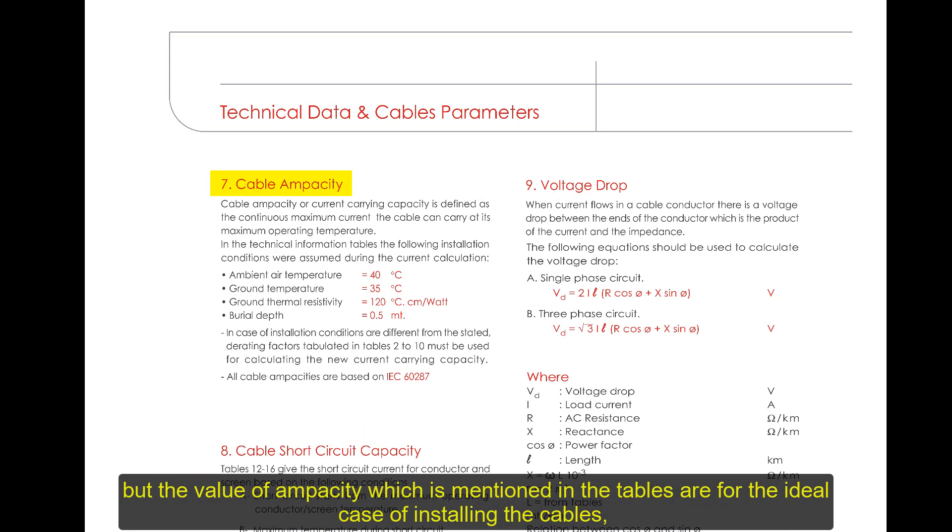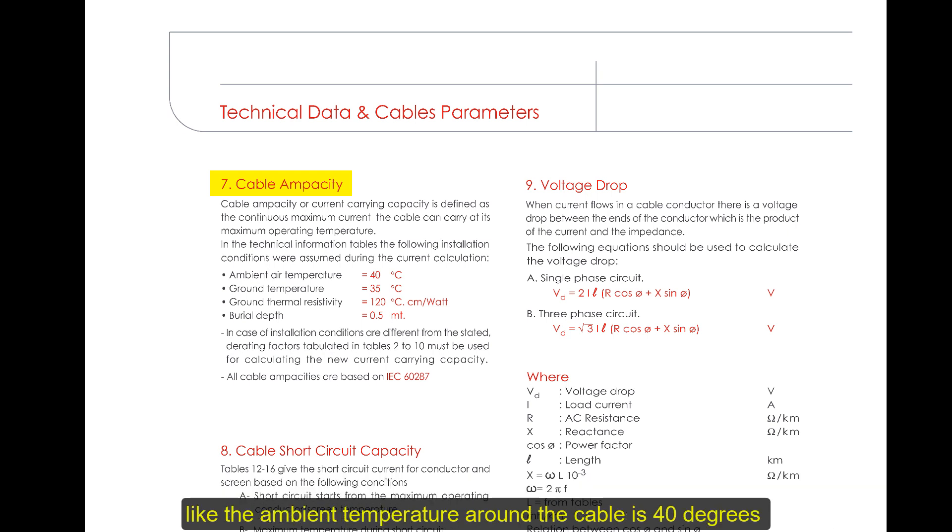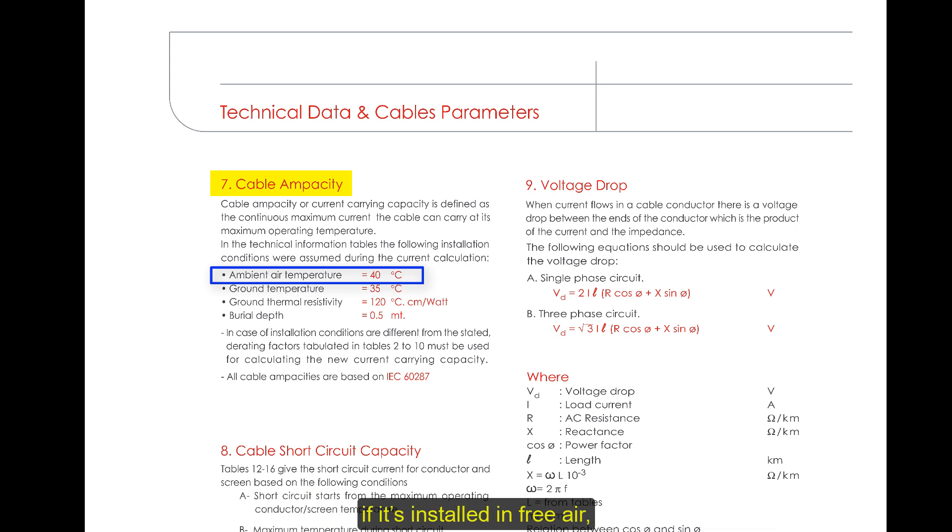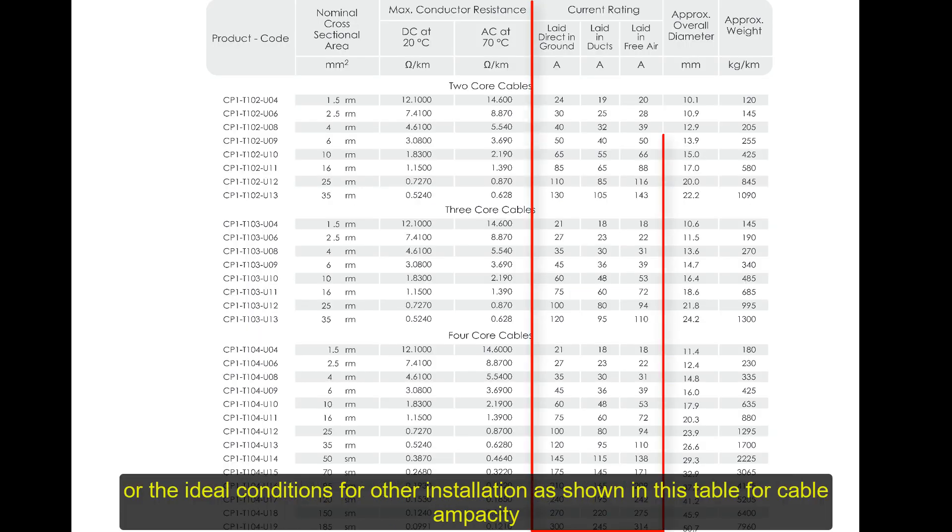But the value of ampacity which is mentioned in the tables are for ideal case of installing the cables. Like the ambient temperature around the cable is 40 degrees Celsius if it's in free air, or the ideal conditions for other insulation as shown in this table for cable ampacity.